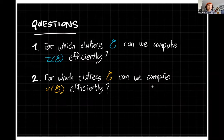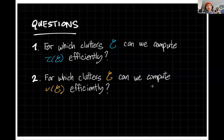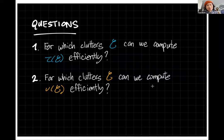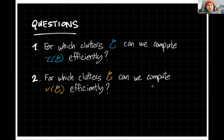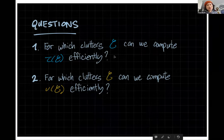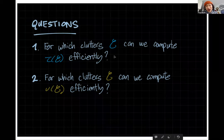In general, for the clutter of s-t paths, the packing number always equals the covering number. There are two main questions about clutters: for which clutters can you compute the covering number efficiently, and for which clutters can you compute the packing number efficiently? Even for graphs we don't exactly know for which ones the vertex cover number can be computed efficiently, so this is quite a hard problem.